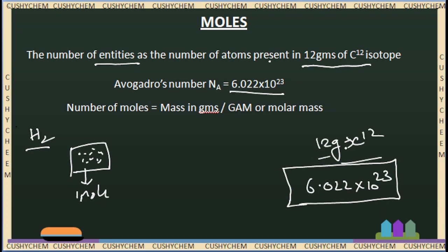So we define one mole using this number. One mole of hydrogen molecules is 6.022 × 10²³ atoms. One mole is 6.022 × 10²³ molecules.